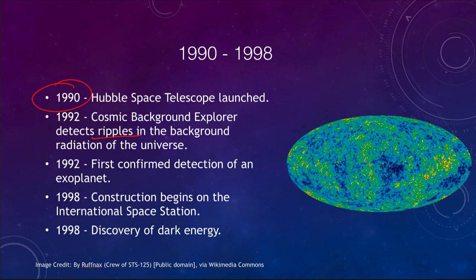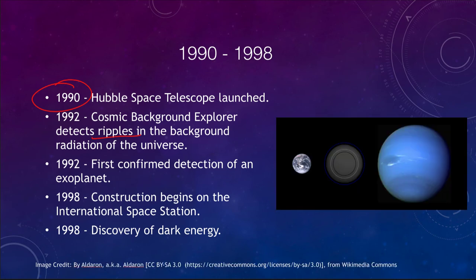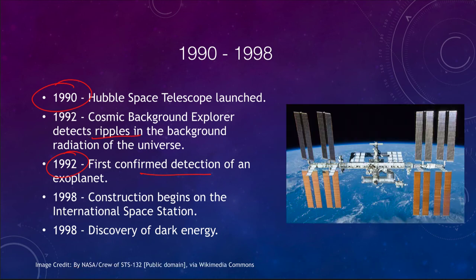Also in 1992, we had the first confirmed discovery of an exoplanet. Prior to 1992, we only knew of the planets in our solar system — this was the first confirmation of a planet outside of it. In 1998, we began construction of the International Space Station.